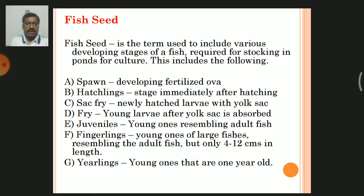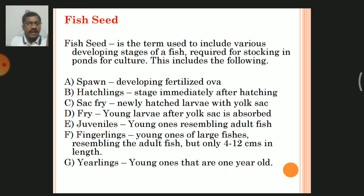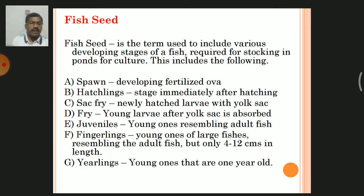Juveniles are young ones resembling adult fish characters. Fingerlings are young ones having a length like fingers. Yearlings are young ones that are one year old.